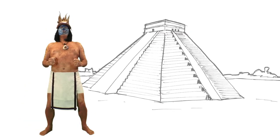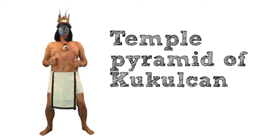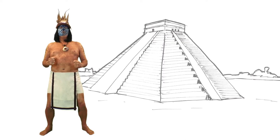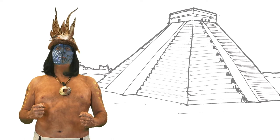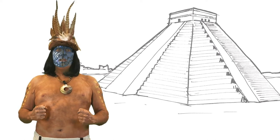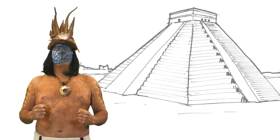At the center of Chichen Itza is the temple pyramid of Kukulkan, which measures over 24 meters high. The pyramid is surrounded by a wide open space for markets and ceremonies, and there are lots of smaller temples and a palace for our ruler, as well as houses and accommodations for the priests.